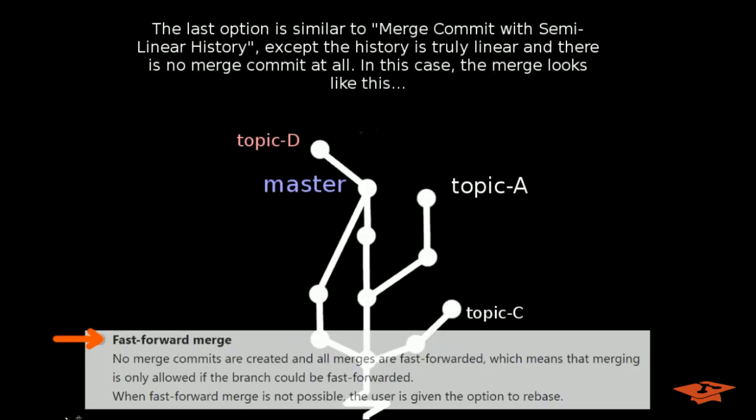So the third and last option is the fast forward merge option. This is similar to the merge commit with semi-linear history, except the history is truly linear and there is no merge commit at all when the merge is complete.